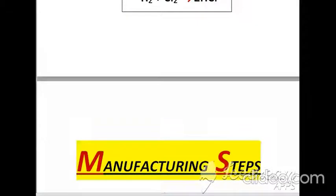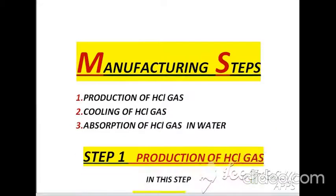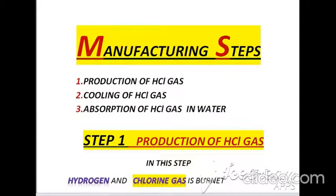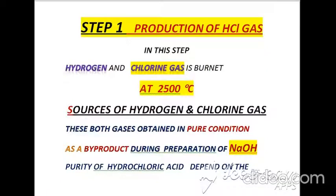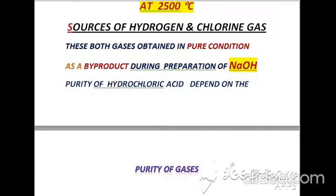The manufacturing steps involved in this process are: the first is production of hydrochloric acid gas, the second is cooling of that hydrochloric acid gas, and the third is absorption of the hydrochloric acid gas into water. In the first step, hydrogen and chlorine gas are burnt at 2500°C in a special type of furnace to obtain hydrochloric acid gas. Both gases are obtained in pure condition as a by-product during preparation of sodium hydroxide, and the purity of the hydrochloric acid depends on the purity of these gases.